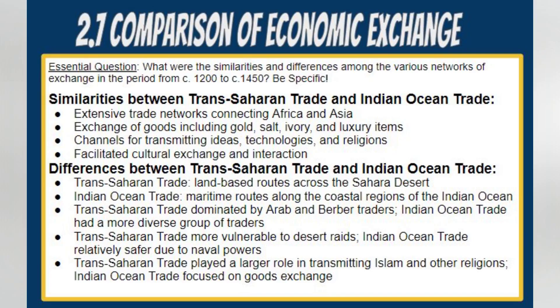The Silk Road and Indian Ocean trade were prominent trade networks that thrived during the Middle Ages, connecting Asia, Europe, and Africa and fostering the exchange of goods, ideas, and cultures. These networks shared several similarities. Both were extensive and facilitated connections between different regions of the world, serving as conduits for the exchange of various commodities, including silk, spices, gold, and other luxury items.